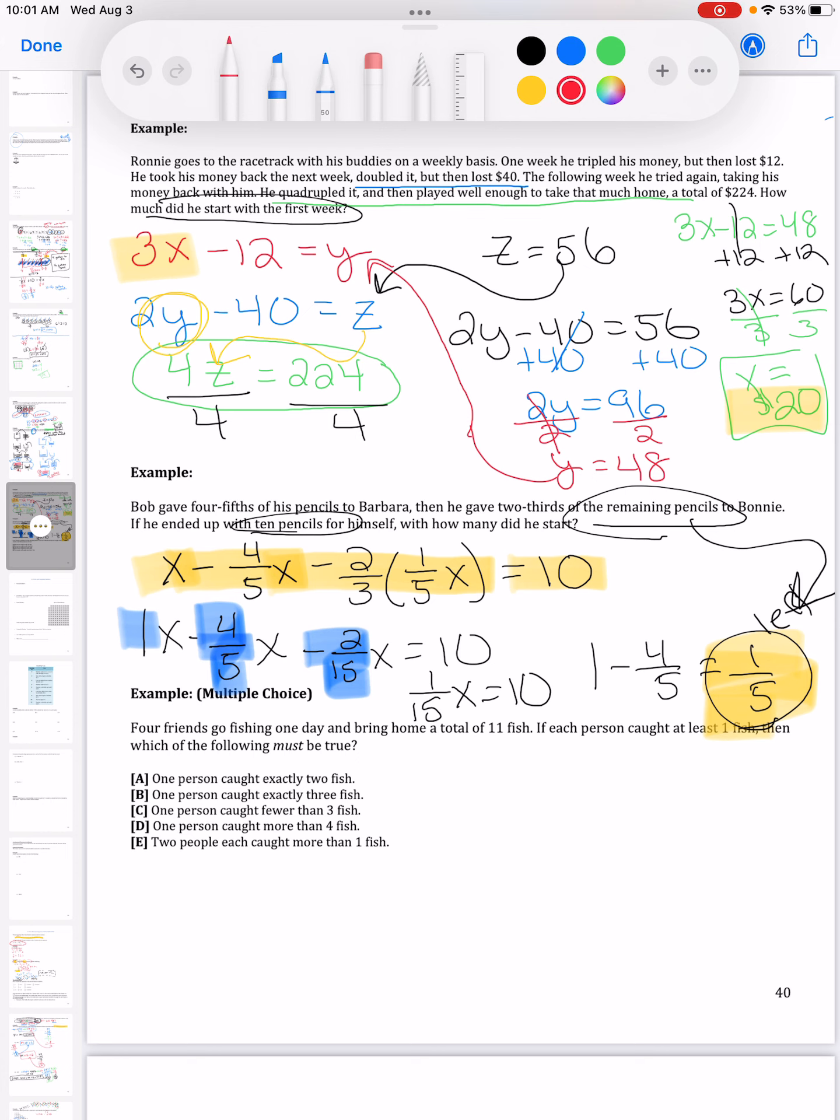Now we can say, just the numbers here, let me highlight those. So one minus four-fifths minus the two-fifteenths, so just typing those in, that's going to give me one-fifteenth X is equal to ten. I'm going to solve for X.